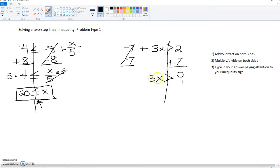Now we have 3 times this x, so in order to get rid of it, we're going to divide by 3 on both sides. So x is greater than 3.